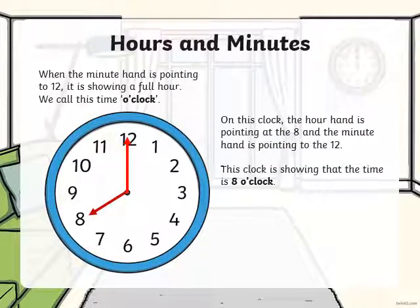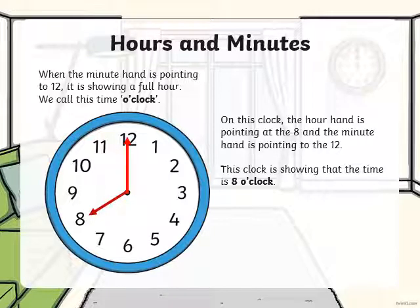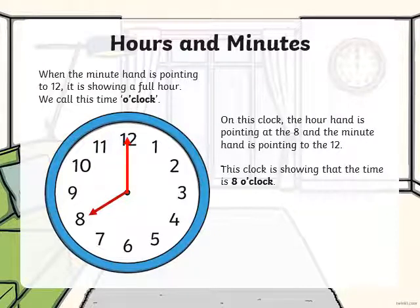Hours and minutes. When the minute hand is pointing to 12, it is showing a full hour. We call this time o'clock. On this clock, the hour hand is pointing at the 8 and the minute hand is pointing to the 12. This clock is showing that the time is 8 o'clock.